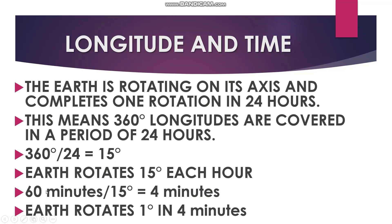Longitude and time: the Earth is rotating on its axis and completes one rotation in 24 hours. This means 360 degrees of longitude are covered in 24 hours. If we divide 360 degrees by 24 we get 15 degrees — meaning Earth rotates 15 degrees each hour. Since 1 hour equals 60 minutes, dividing 60 minutes by 15 degrees gives us 4 minutes, which means the Earth rotates 1 degree in 4 minutes.